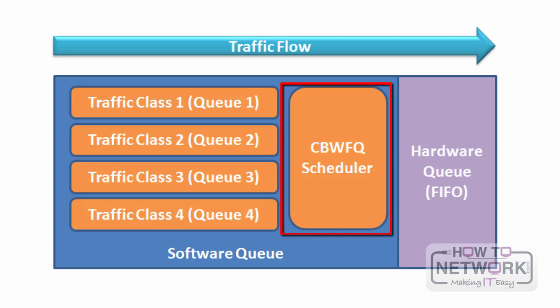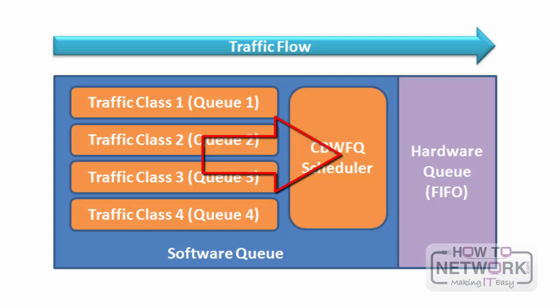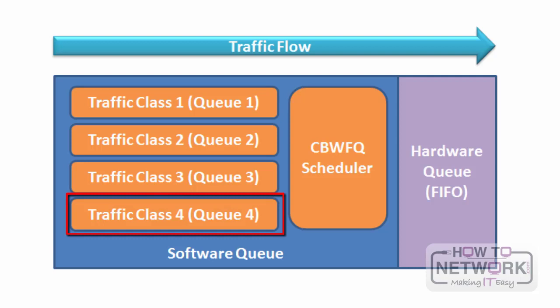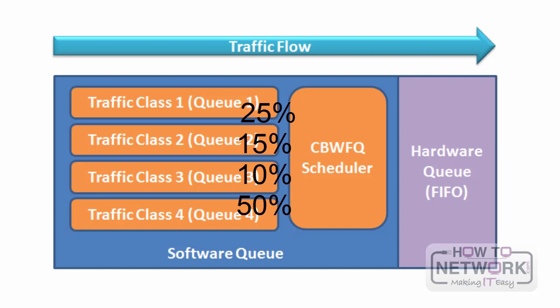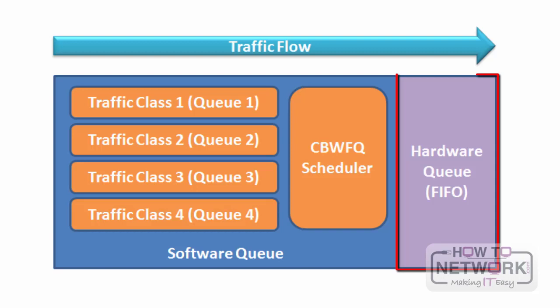As shown in the picture, certain classes receive higher priority than others. The CBWFQ scheduler receives information from queues defined for different forms of traffic. Traffic that does not fit any manually defined queue automatically falls into the class default queue. These queues can be assigned minimum bandwidth guarantees for all traffic classes. CBWFQ offers powerful methodologies for controlling exactly how much bandwidth various classifications will receive. If a queue contains more than one traffic type, it will use FIFO internally, so the network designer should not combine too many forms of traffic in a single queue.